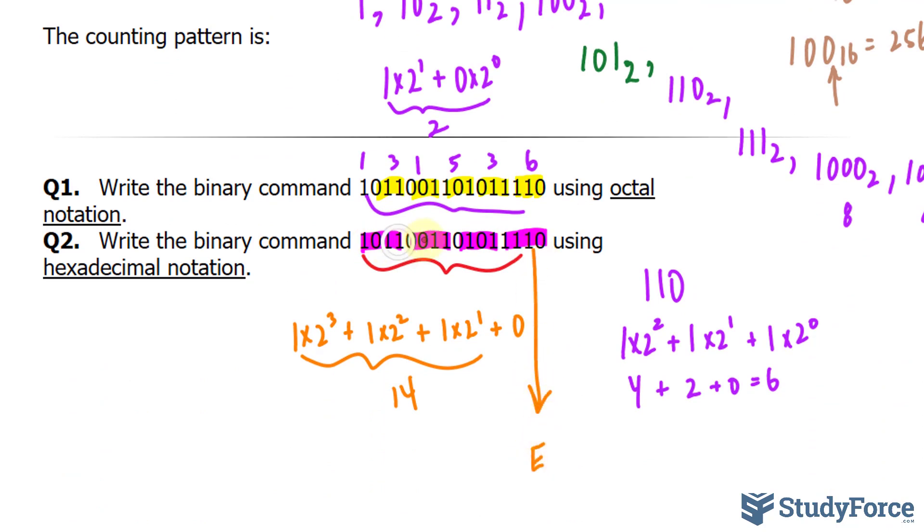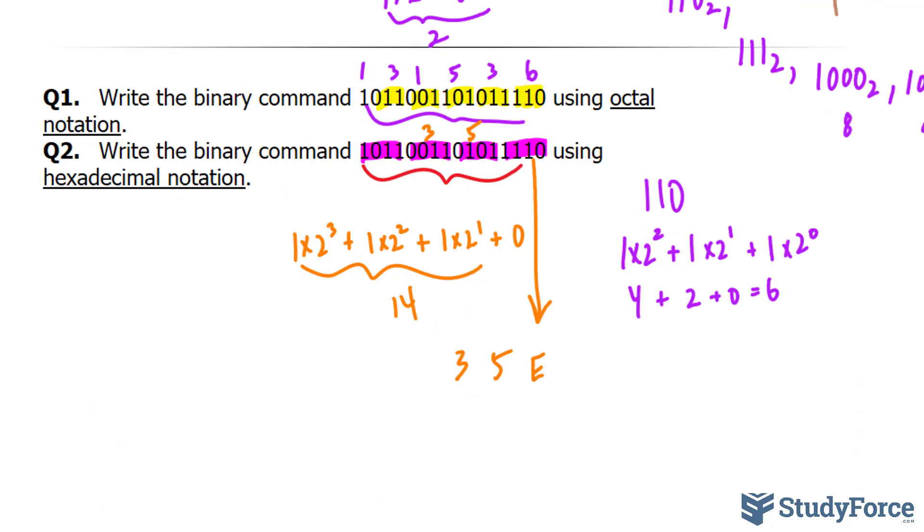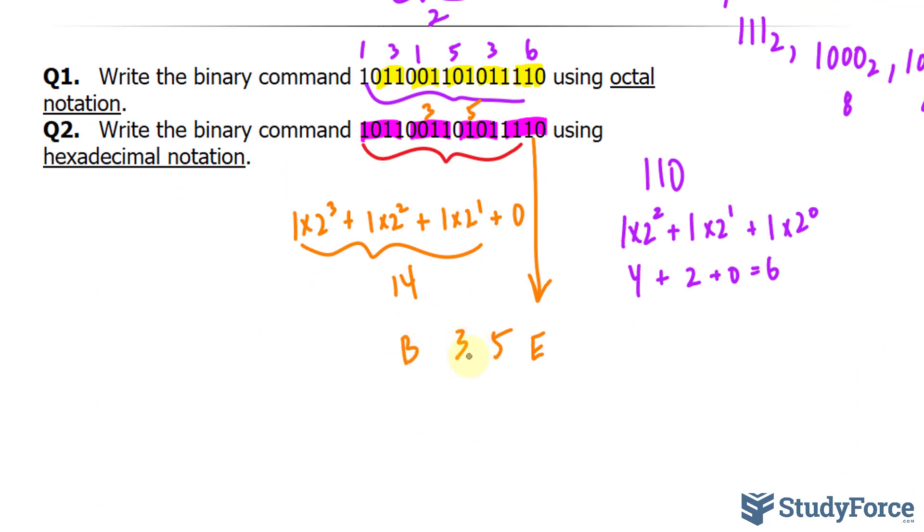You have to do this again for these three groups. I'll do this one for you, these two. This one is 3 and 5, so so far our number is 3, 5, e. If we convert that into decimal notation, you will end up with 11. 11, if we look at this legend here, that's 10, that's 11. So it's b. We have b, 3, 5, e as the number in hexadecimal notation.